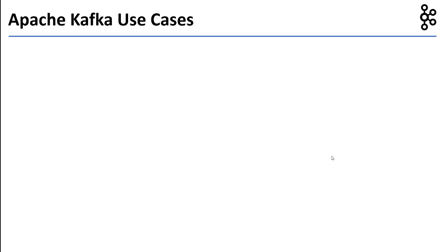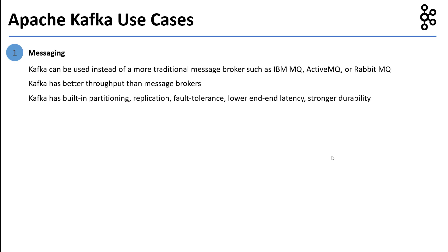Let's look at some of the common use cases where Kafka can be used. First, Kafka can be used for messaging use cases. Kafka can be used instead of a more traditional message broker such as IBM MQ, ActiveMQ or RabbitMQ.